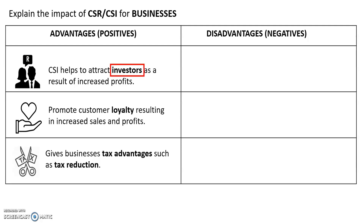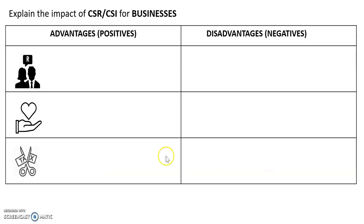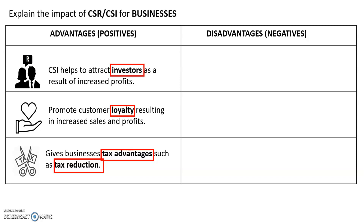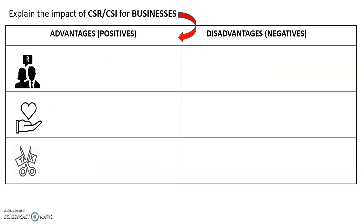Let's look at our core words here. Investors — you attract investors. Customer loyalty. And tax advantages like tax reduction. If we take away the words, let's see if you can remember the facts: the scissor is for tax reduction, the hand is for customer loyalty, and the people looking for a way to invest represent investors. This question — the advantages — you can remember as ILT, which is an acronym: Invest on Loyalty Tax.